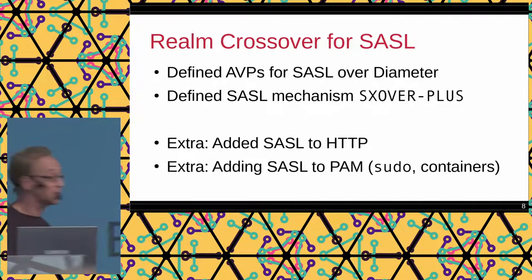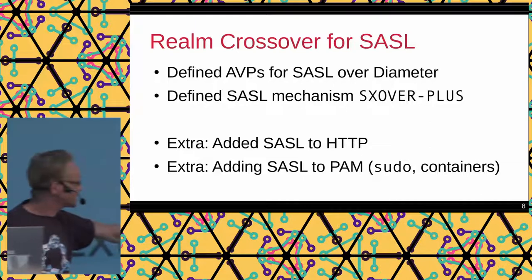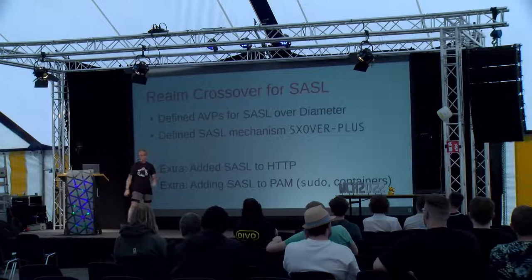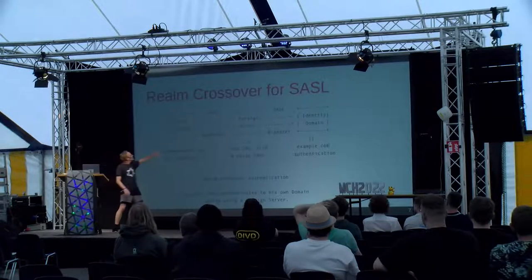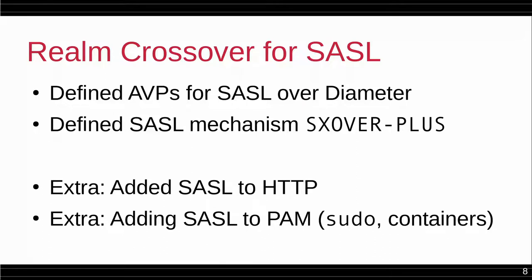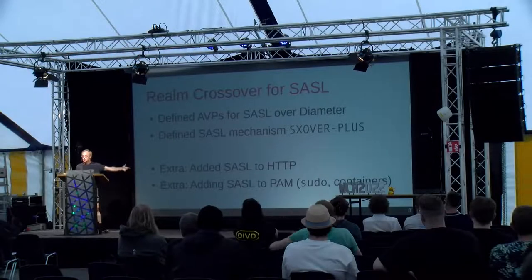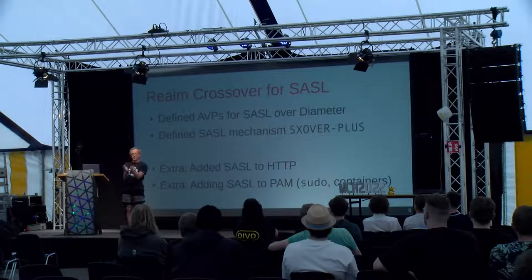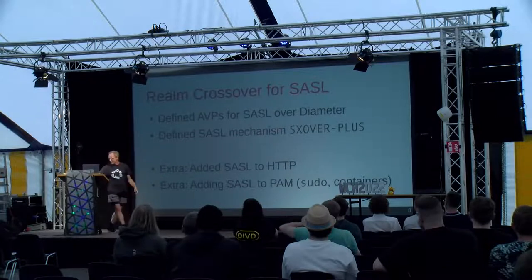We thought it was cool to demo this with HTTP, so we have an authentication mechanism for HTTP that passes SASL — a web browser speaking SASL over HTTP to a web server, which in the back end can use the identity domain. I'm also building this into PAM, so you could use it in sudo or for console access for a container. That also means a simple, small container doesn't need to know any accounts — it can just forward authentication to a trusted internal node.